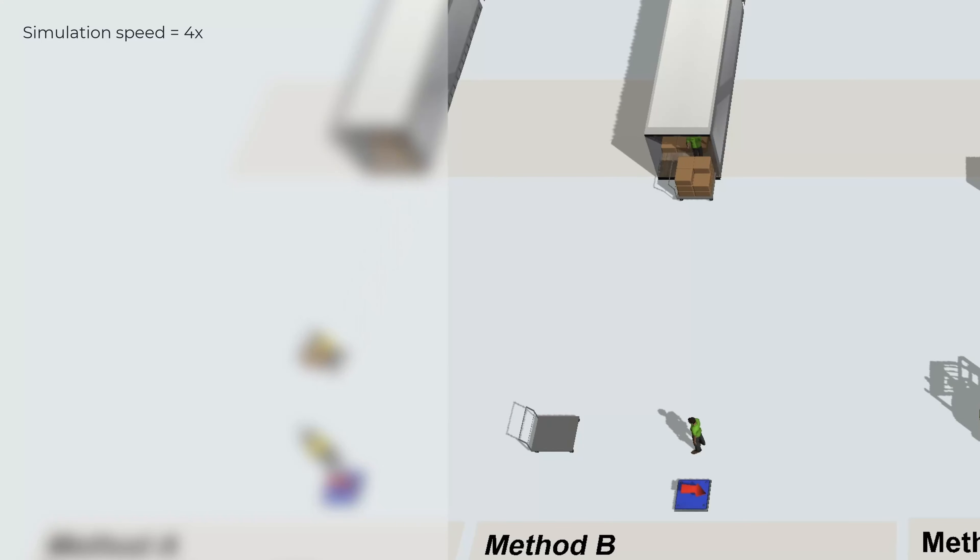Then we have method B, which consists of stacking the boxes on a cart, pushing the cart to the processing area, and bringing back an empty cart.